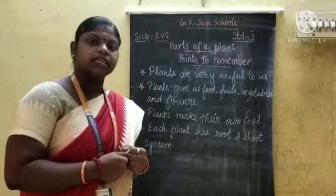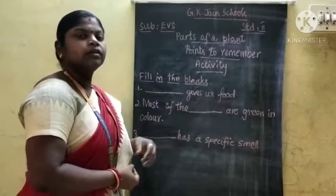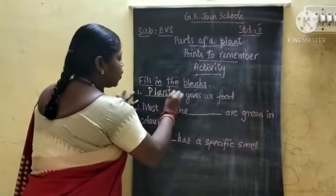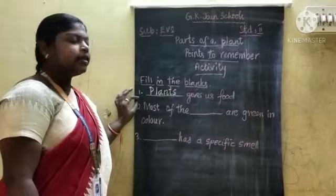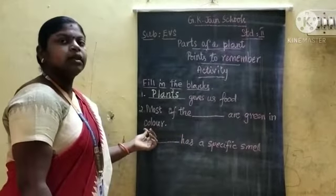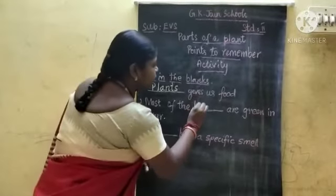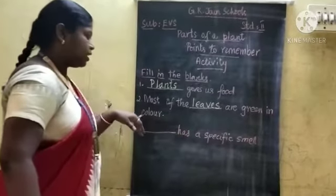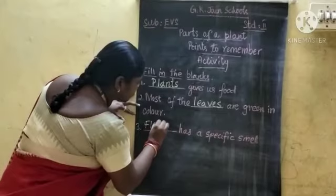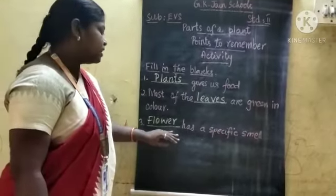Now we are going to see an activity. Fill in the blanks. First one: dash gives us food. Plants give us food. It also gives us fruits, vegetables and flowers. Second: most of the dash are green in color. Most of the leaves are green in color. Third: dash has a specific smell. Flowers have a specific smell because they attract birds and insects by their specific smell.